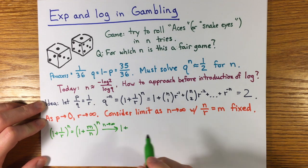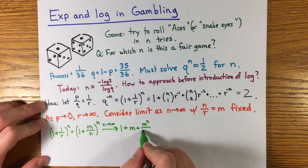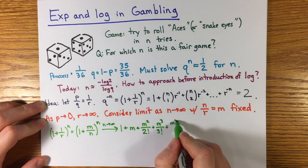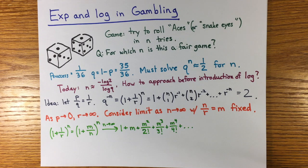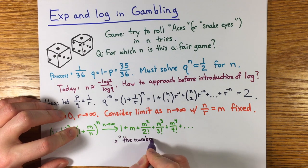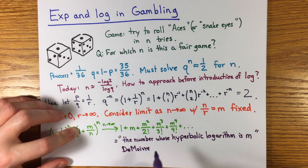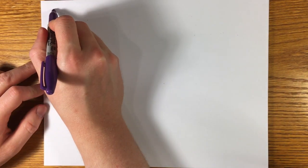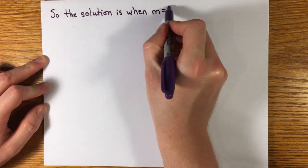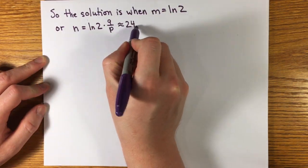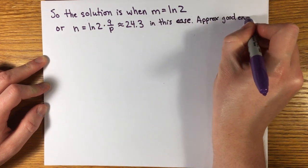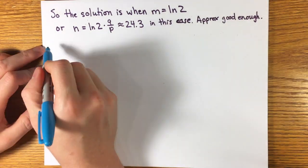Now suppose we approximate the expression involving r and n by looking in the limit as p goes to 0. So r goes to infinity and n goes to infinity so that the ratio n over r is fixed to be some value, say m. Then by carefully examining the limit of the binomial coefficients, you get the power series we recognize as the exponential, the sum of m to the k over k factorial. If this analysis had been done by Cardano, it might have been the starting point for the exponential. But instead it waited until Dumois in 1711, who referred to this result as, the number whose hyperbolic logarithm is m, because logarithms have been around almost 100 years, but it was before Euler's work on the exponential function. In any case, you get the solution by taking hyperbolic logarithms, m equals log 2, or n equals log 2 times q over p, which is about 24.3 in this case, which is good enough to find the right number of tries.